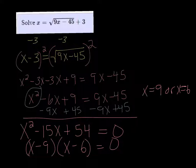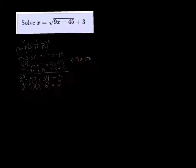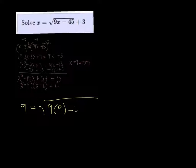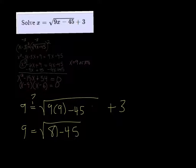However, we need to check and make sure that those work. So we're going to plug 9 back into the original equation and see if it works. So we have 9 is equal to the square root of 81 minus 45 plus 3.